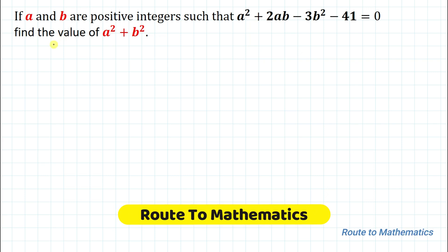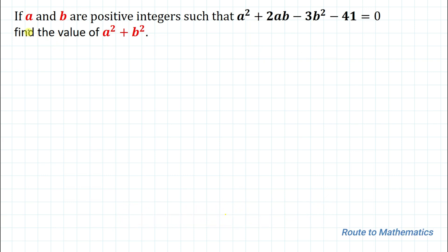Hello everyone, welcome to Root to Mathematics. In this video we are going to solve this interesting equation. The given question is: if a and b are positive integers such that a² + 2ab - 3b² - 41 = 0, then find the value of a² + b².